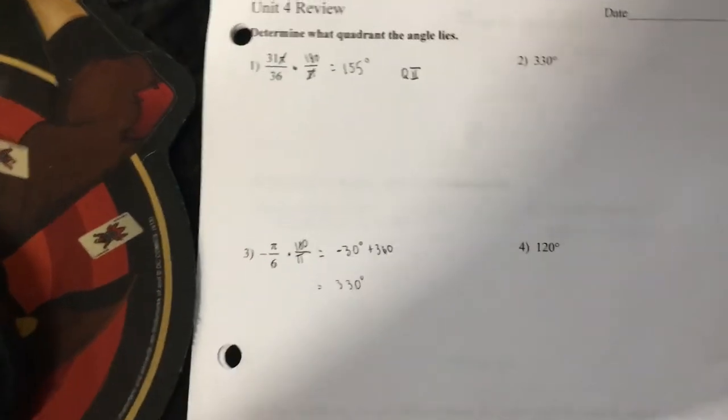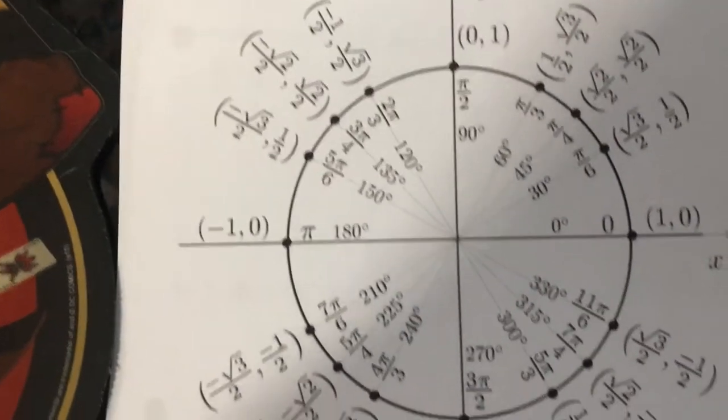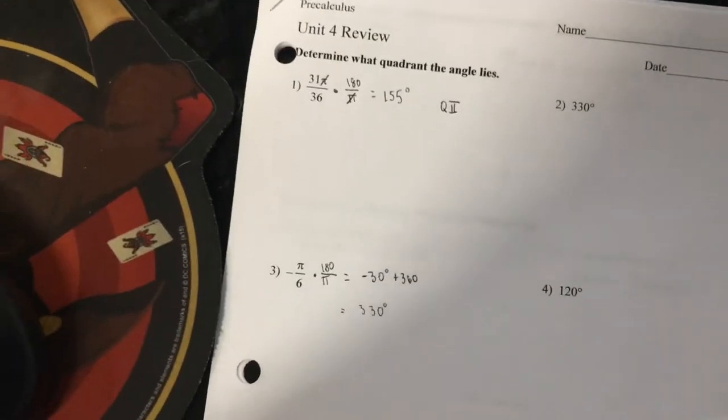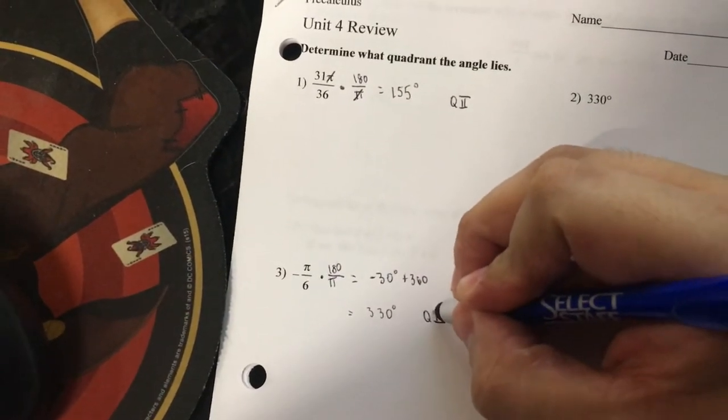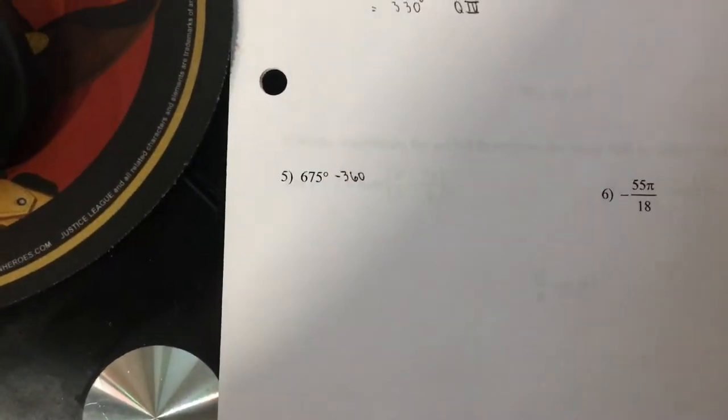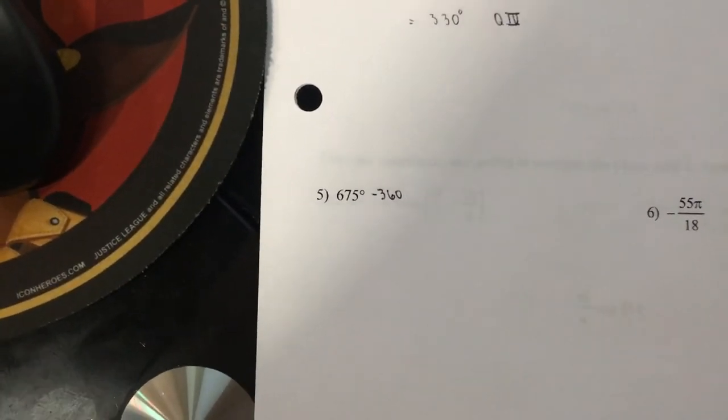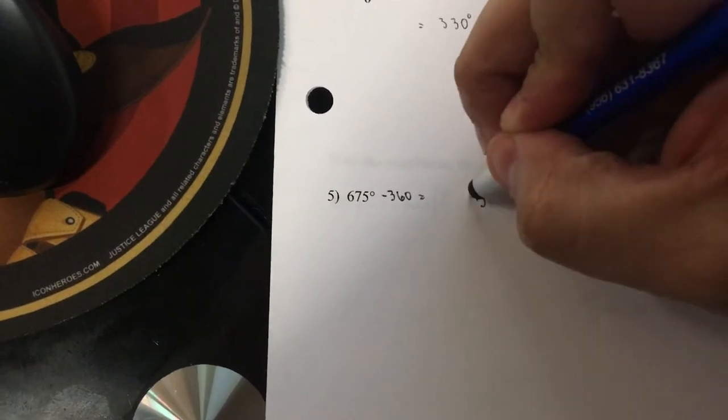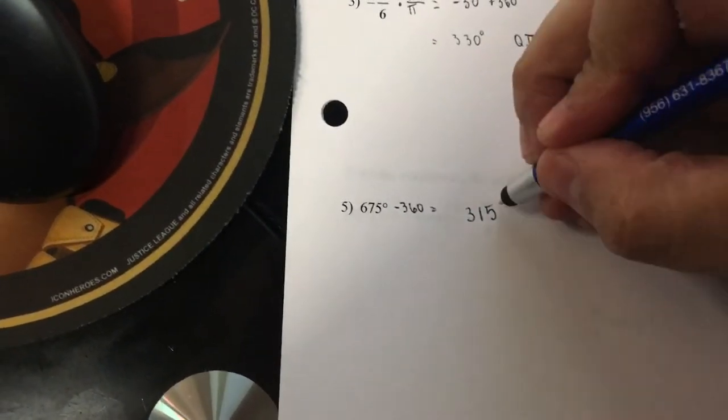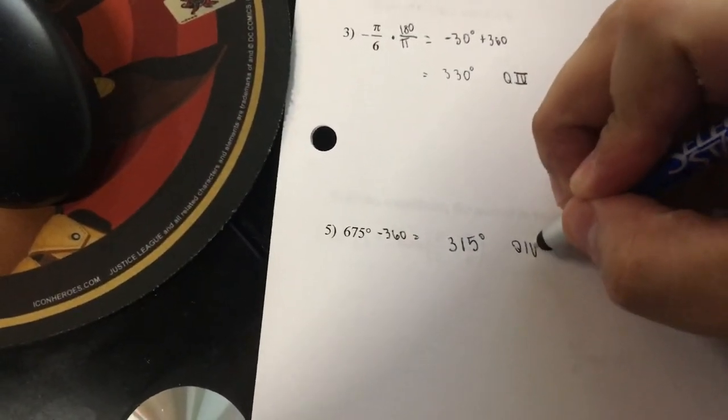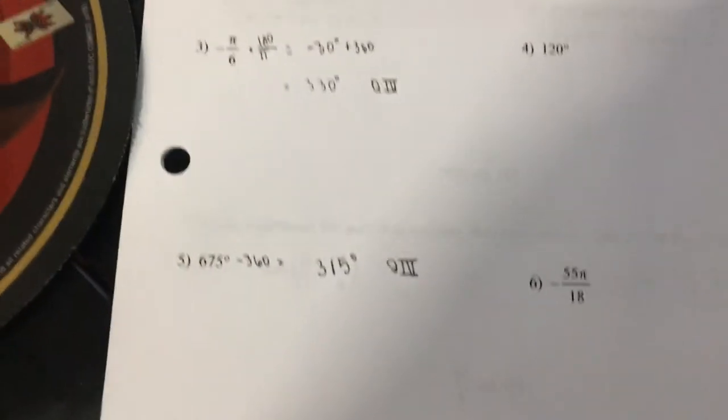If I had something that's bigger than 360, I'm going to subtract 360 until I get something that is in the unit circle. So 675 minus 360 is 315 degrees, and that is on my unit circle in quadrant four. So again, that's how you work these out. This is just a few examples, you do these on your own. I will post the answers so that you guys can see it.